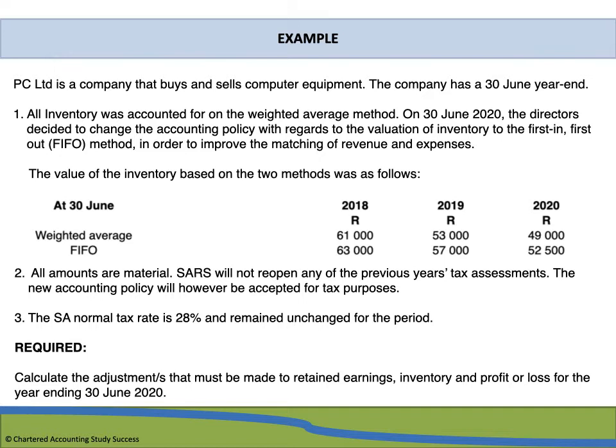The new accounting policy will however be accepted for tax purposes. The SA normal tax rate is 28%, and this has remained unchanged for the period. The requirement is to calculate the adjustments that must be made to retained earnings, inventory, and profit or loss for the year ending 30 June 2020.